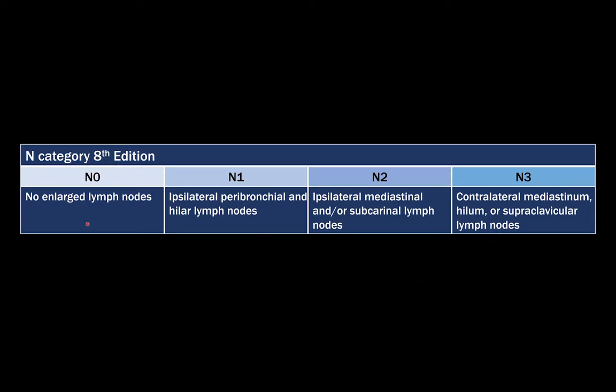This is the breakdown of the N category. N0 means no enlarged lymph nodes. N1 is ipsilateral peribronchial and hilar lymph nodes. N2 is ipsilateral mediastinal or subcarinal lymph nodes. And N3 is contralateral mediastinal, hilar, or supraclavicular lymph nodes of either side.